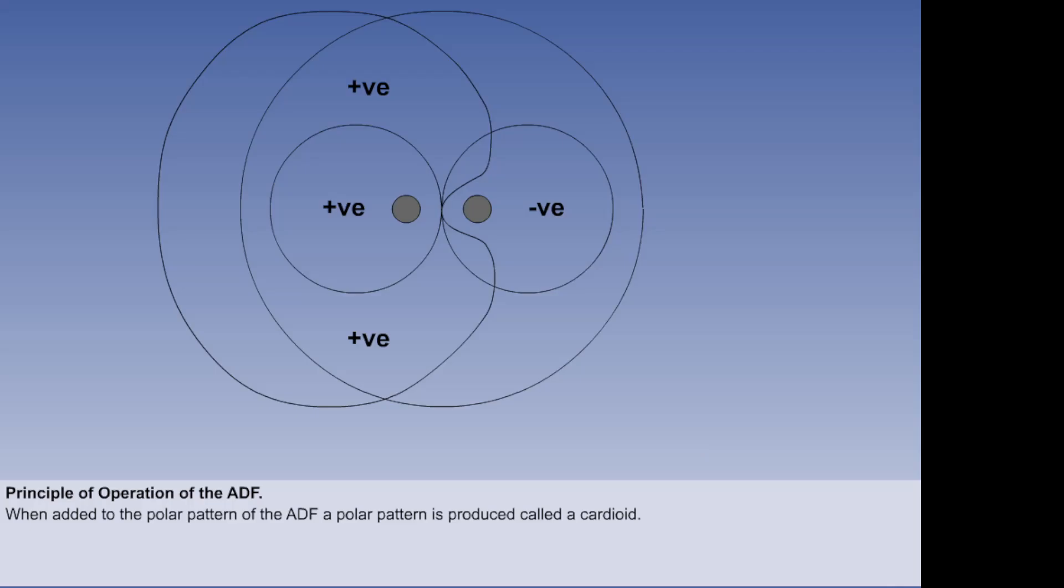Here, we see it is in phase with the left hand element. The resultant polar diagram of signal strength is known as a cardioid, which means that it is heart-shaped.